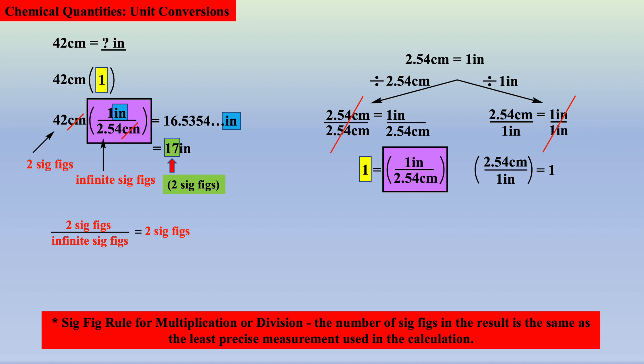Remember, if a numerical value is within a definition, it is assumed to have infinite sig figs. We have now demonstrated that the derived expression on the left allows one to convert from centimeters to inches, and we can assume the derived expression on the right allows one to convert from inches to centimeters.